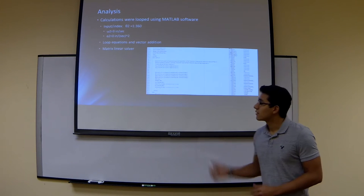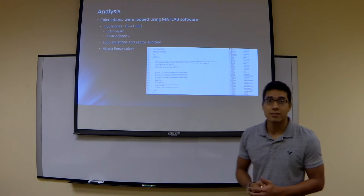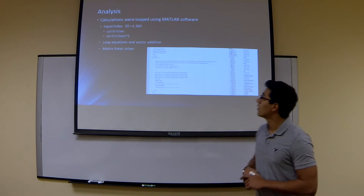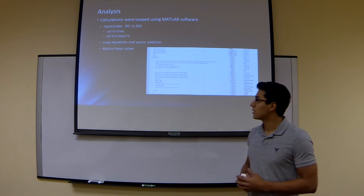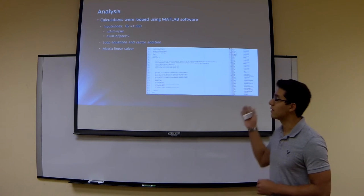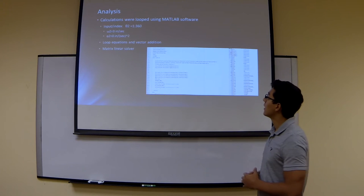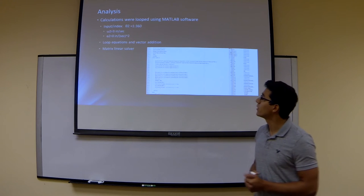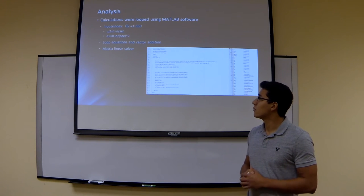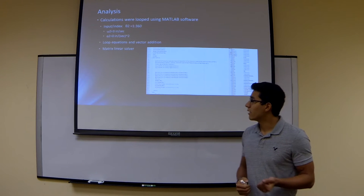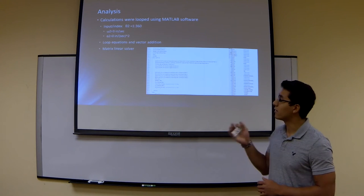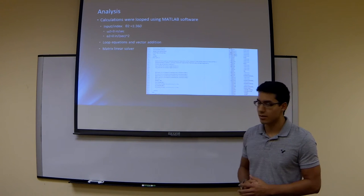For the analysis, rather than doing it manually for 360 iterations, what we did was we developed a MATLAB code where it would take the essential loop equation, which is just vector addition of the representative vectors, and run it through 360 iterations. So our input, our index, was theta 2, 1 through 360. Our angular velocity is 3 inches per second, and our given angular acceleration is 0 inches per second squared.